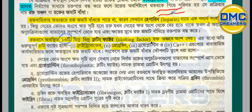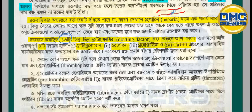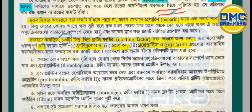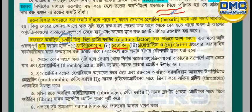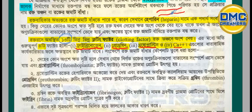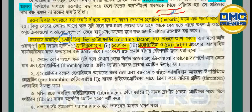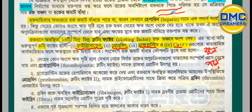To recap: the four primary clotting factors are fibrinogen (factor 1), prothrombin (factor 2), thromboplastin (factor 3), and calcium (factor 4). These are the most important factors to know and remember.